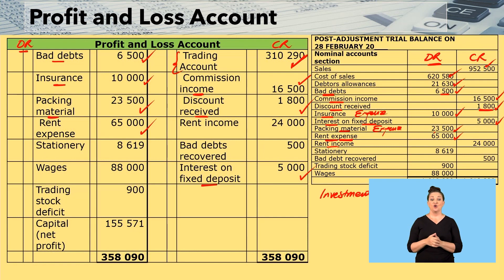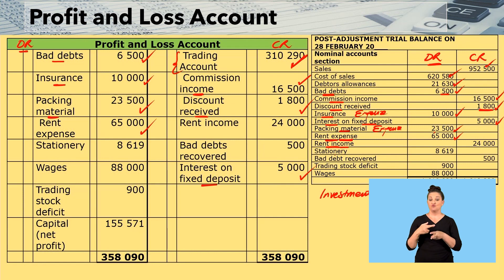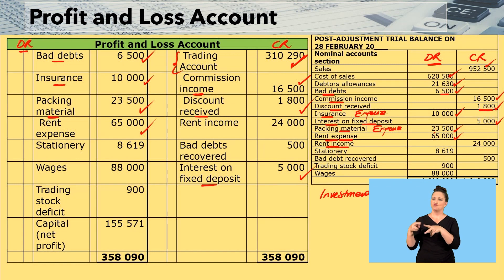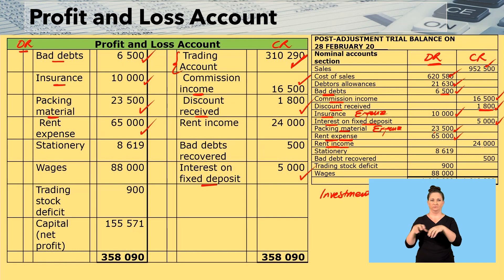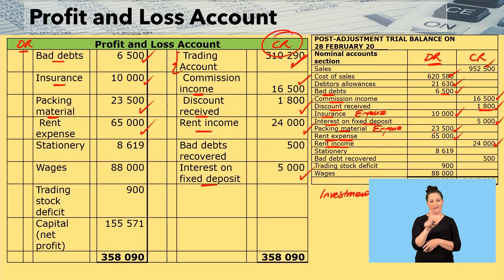The next one is rent income. We have two: rent expense, which is the rent we are paying, and rent income, which is when we have let part of the premises to a tenant — that tenant gives us rent income. Rent income $24,000 is income, so bring it to the credit side of the profit and loss account.